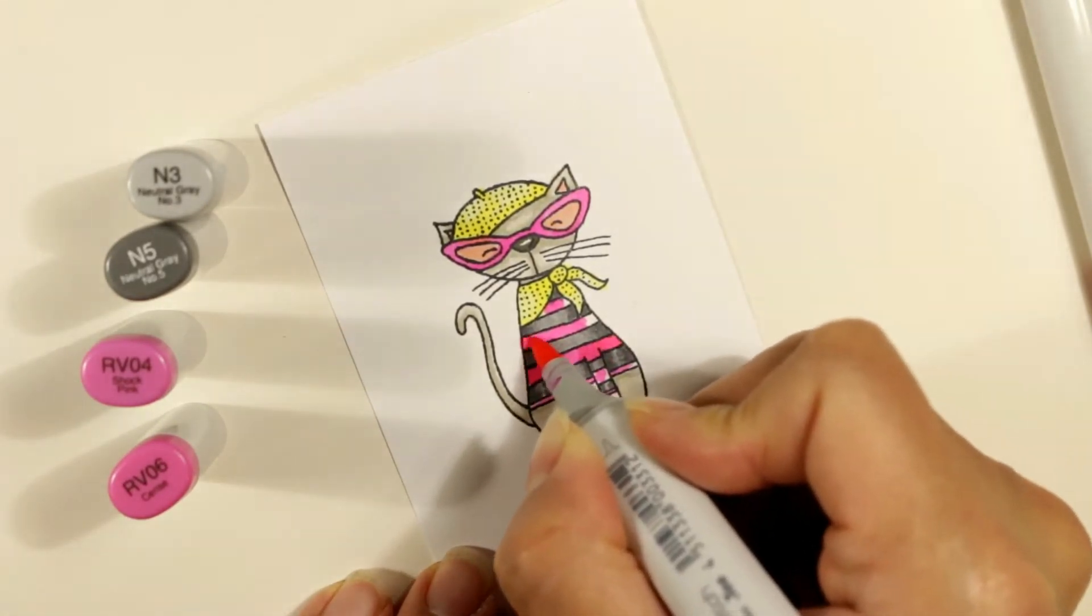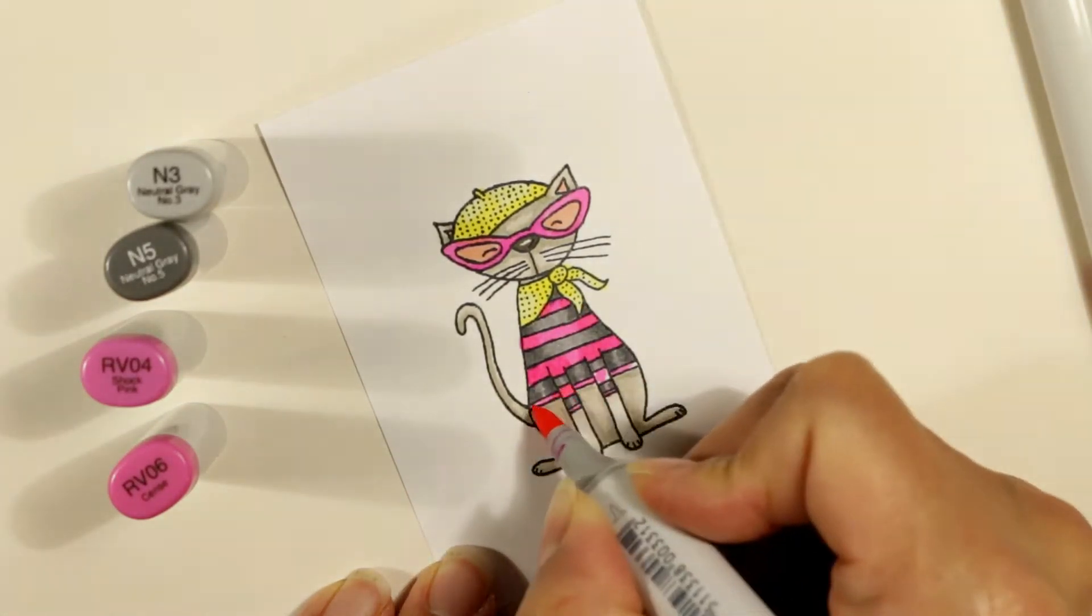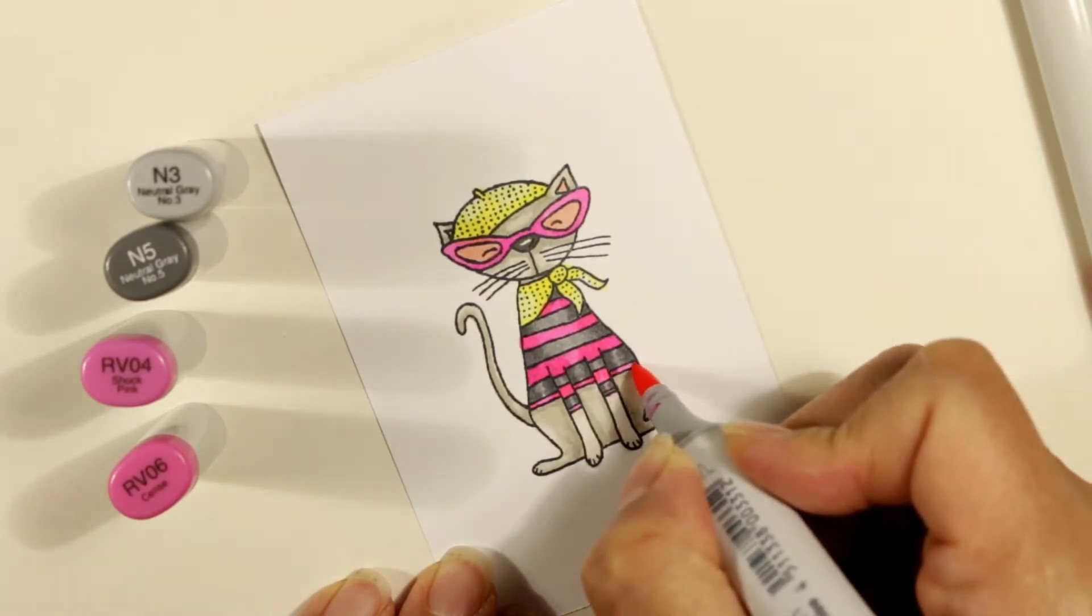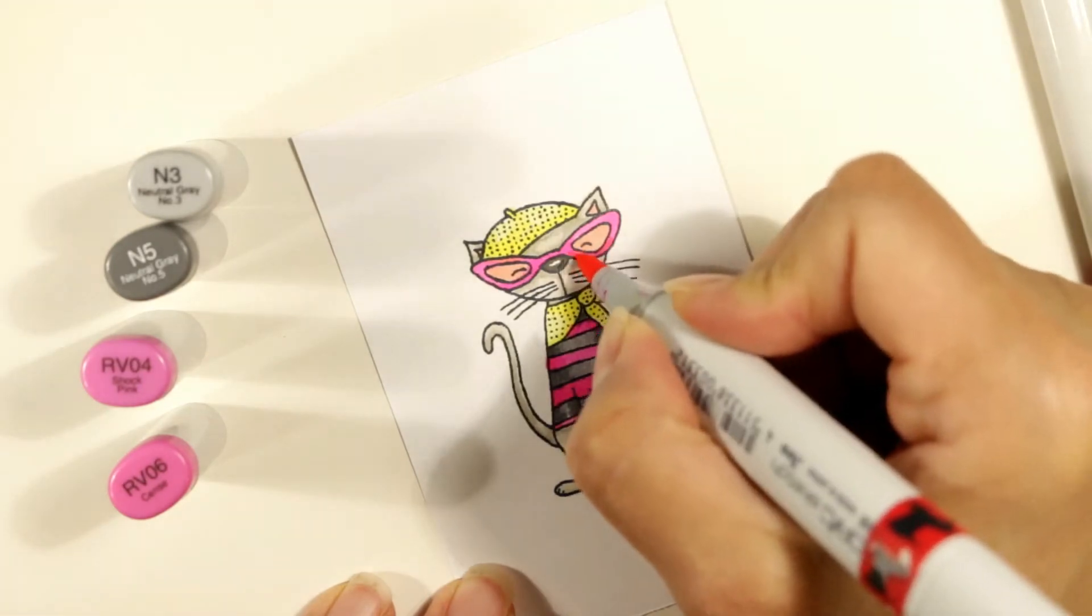And that helps give a 3D look to the image. This is super easy Copic coloring, blending. It's not super complicated. I'm not taking the usual three color tones and trying to do textured flicking.